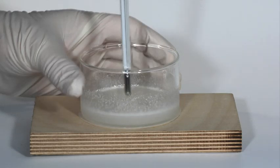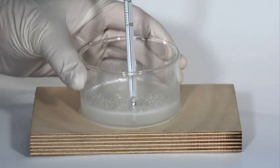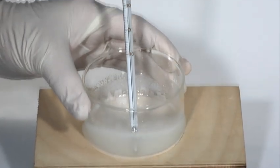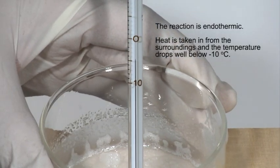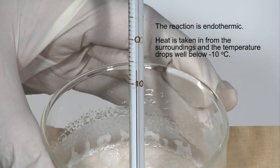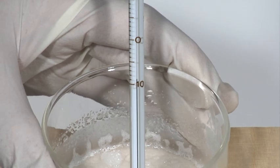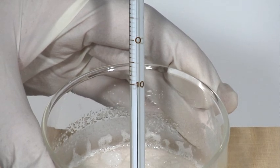In this reaction the water of crystallization in the barium hydroxide crystals is liberated at the same time as ammonia is formed. This gives rise to a large number of product molecules and consequently a large increase in entropy.